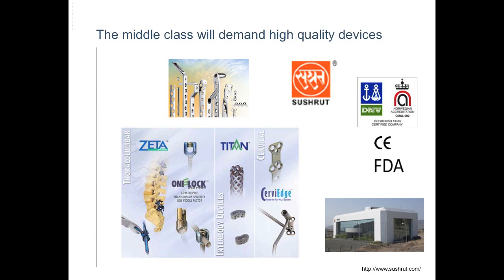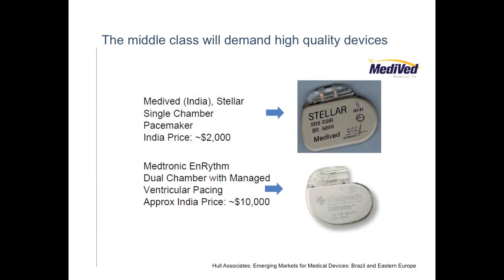The middle class is demanding better and better technology. The products you see here — if I took the company and product names off, you'd think they were being sold in the U.S. Well, they are sold in India, made by an Indian manufacturer called Sushrut. Their products are top-notch and at par in quality with products here, but cheaper. Another company called MediWed is making cardiac rhythm management devices — pacemakers — at substantially cheaper prices. The device may be simpler and not have as long a battery life, but it works. The middle class is demanding better access to these technologies at price points they're comfortable with.